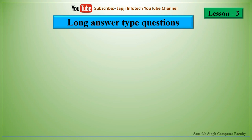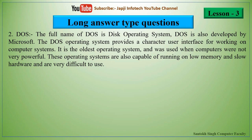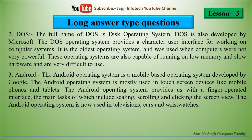The second type is DOS — Disk Operating System, also developed by Microsoft. DOS provides a character user interface and is the oldest operating system, used when computers were not very powerful. It can run on low memory and slow hardware but is very difficult to use. The third type is Android — a mobile-based operating system developed by Google, mostly used in touch-screen devices like mobile phones and tablets. It provides a finger-operated interface with scaling, scrolling, and clicking, and is now also used in televisions, cars, and wristwatches.